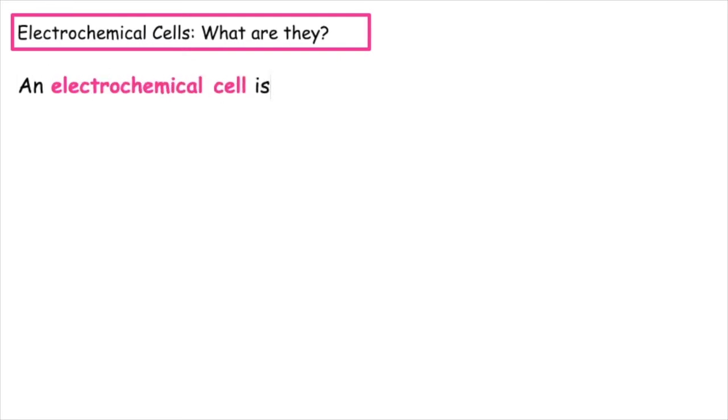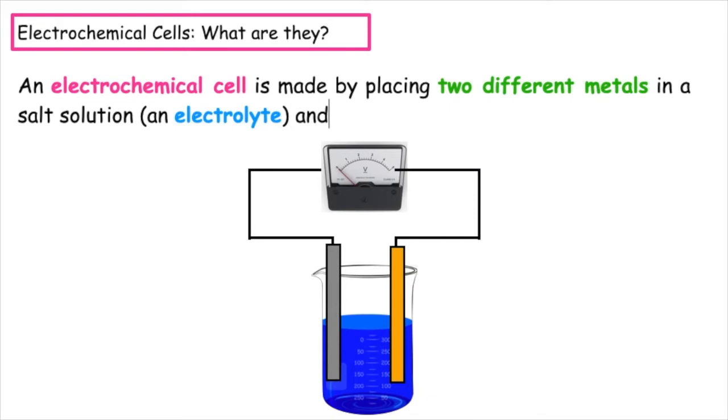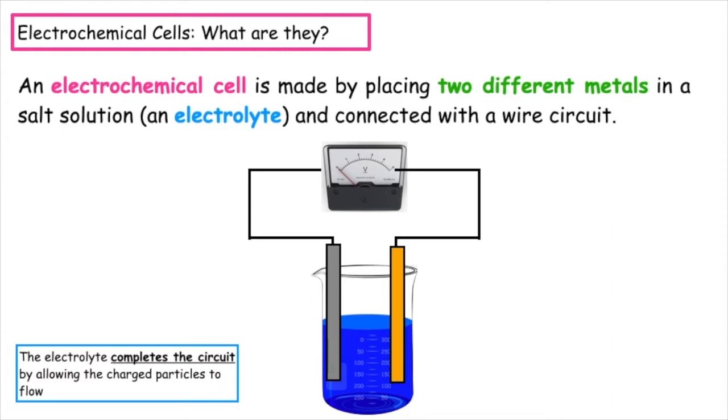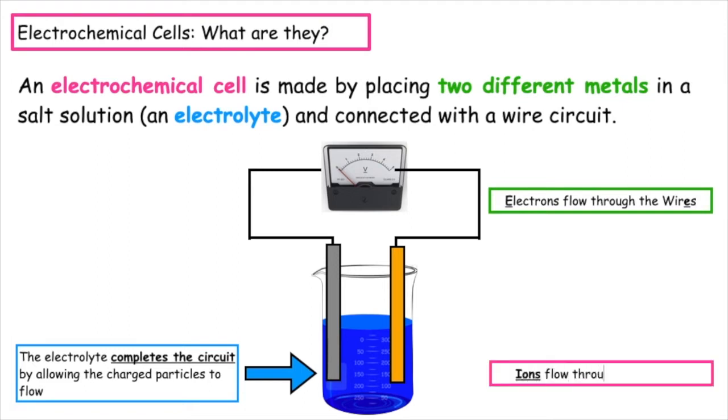An electrochemical cell is made by placing two different metals in a salt solution, which is known as an electrolyte, and connected with a wire circuit. The electrolyte completes the circuit by allowing the charged particles to flow. You need to remember that electrons flow through the wires and ions flow through the solution.